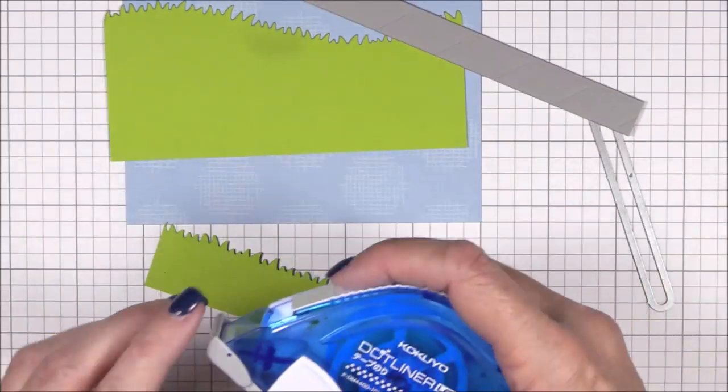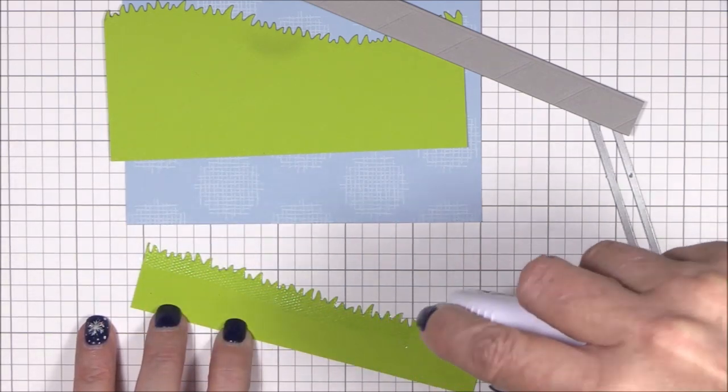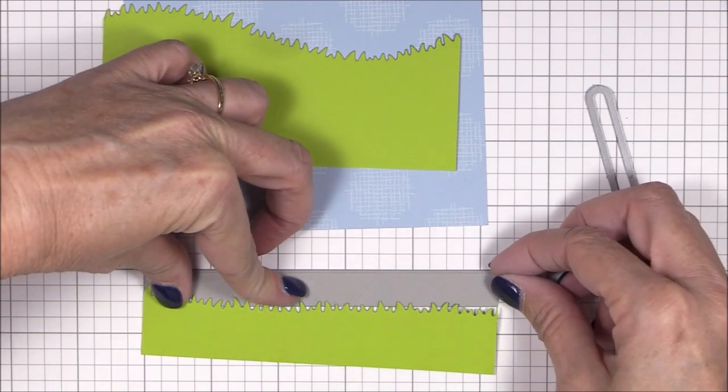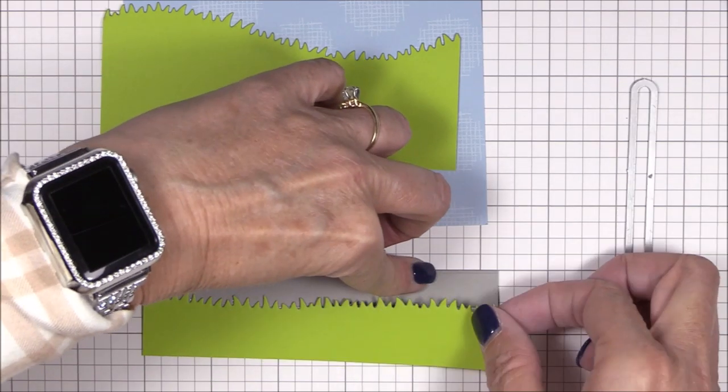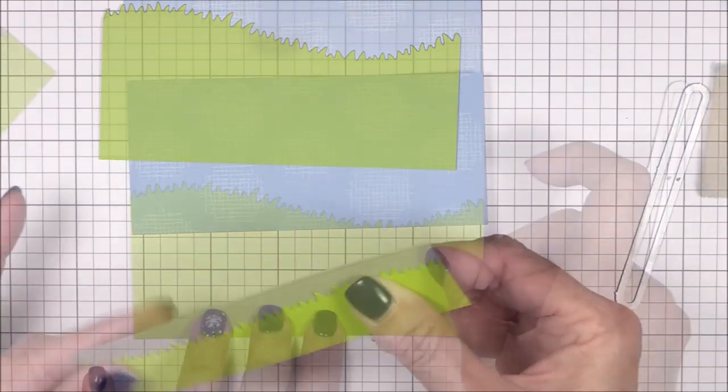I'll start by adhering the shortest grass piece to the sidewalk by adhering some tape runner adhesive to the top portion of the back of the grass. Then I'll use my grid pad to align the grass with the sidewalk. You'll notice that I used my grid pad throughout this video. Can't imagine my crafty life without it.